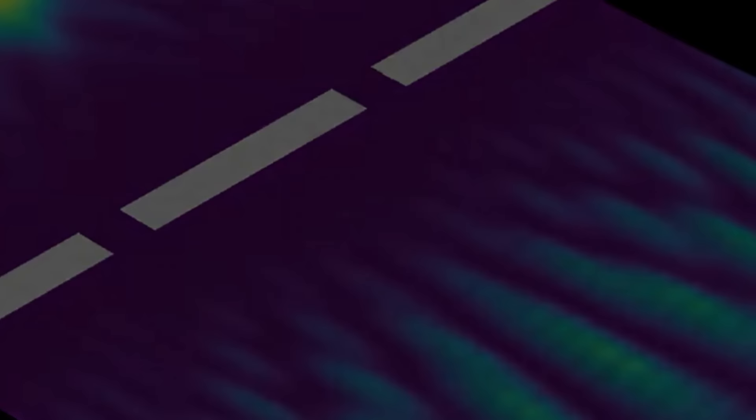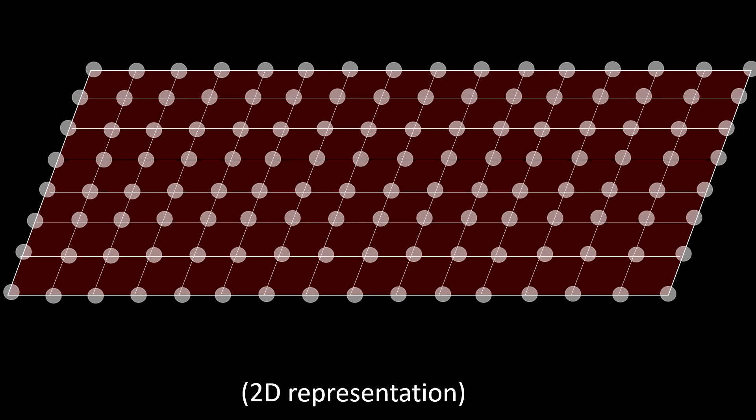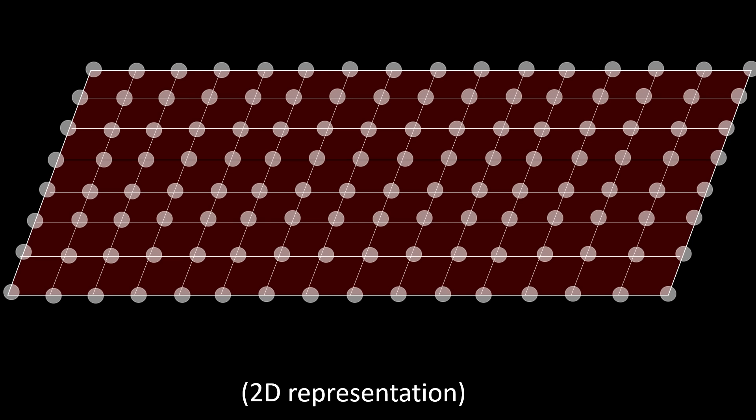Now let me try to formulate what exactly is bothering me with this view. Let's assume that the particle is indeed an electron moving at a non-relativistic speed. Its mass represents an amount of energy, about half a mega electron volt.